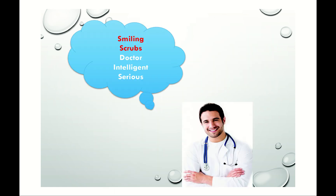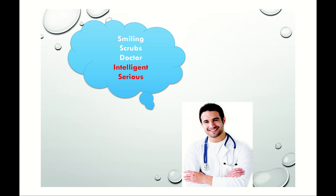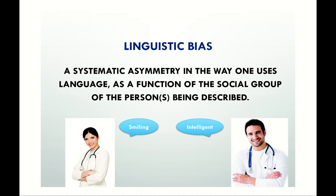It's a white guy. I always get some words that describe his physical appearance too — smiling and scrubs. Doctor. Notice that 'nurse' is usually not in the words for the guy. But then I usually also get some words for the guy that are more interpretive, more abstract — reading into not just who he is, but how he is. He's intelligent. He's serious. That's an example of linguistic bias. Linguistic bias is simply a systematic asymmetry in the way that we use language as a function of the social group of the person being described. Social psychologists believe this is really pervasive in human communication, particularly face-to-face, but also in social media. And it's one of the ways in which we perpetuate stereotypes.